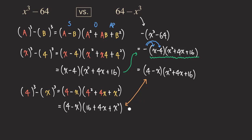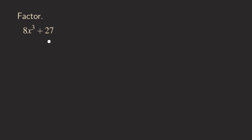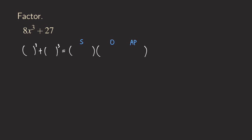Now let's look at a more difficult example: 8x³ + 27. This is the sum of two cubes. X cubed is a perfect cube, and 27 is a perfect cube. Write the formula: something cubed plus something cubed equals a binomial times a trinomial. Using SOAP: plus gives plus in the binomial, opposite gives minus in the middle, always positive gives plus at the end. Fill in A and B positions with squares on the outer trinomial terms.